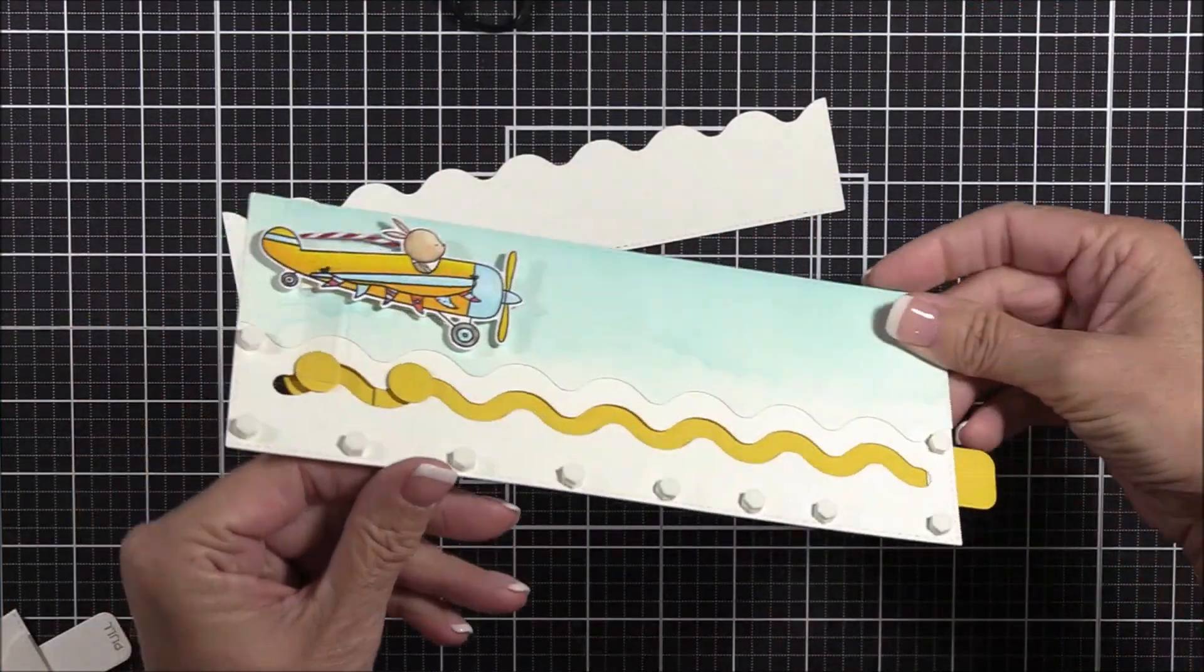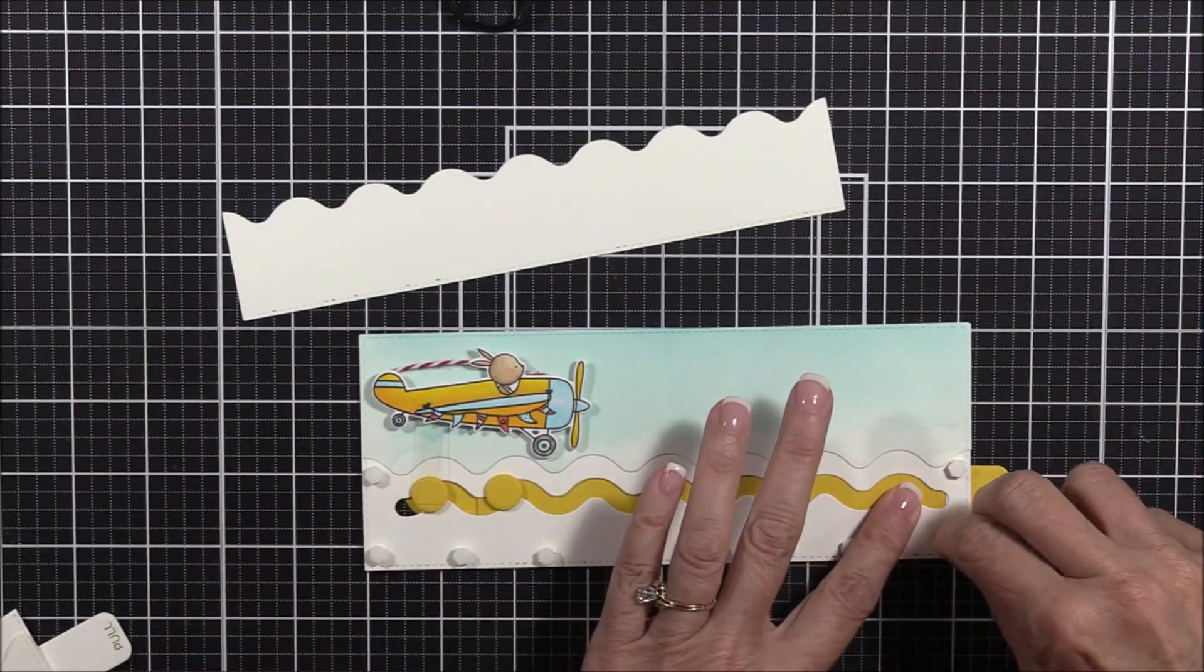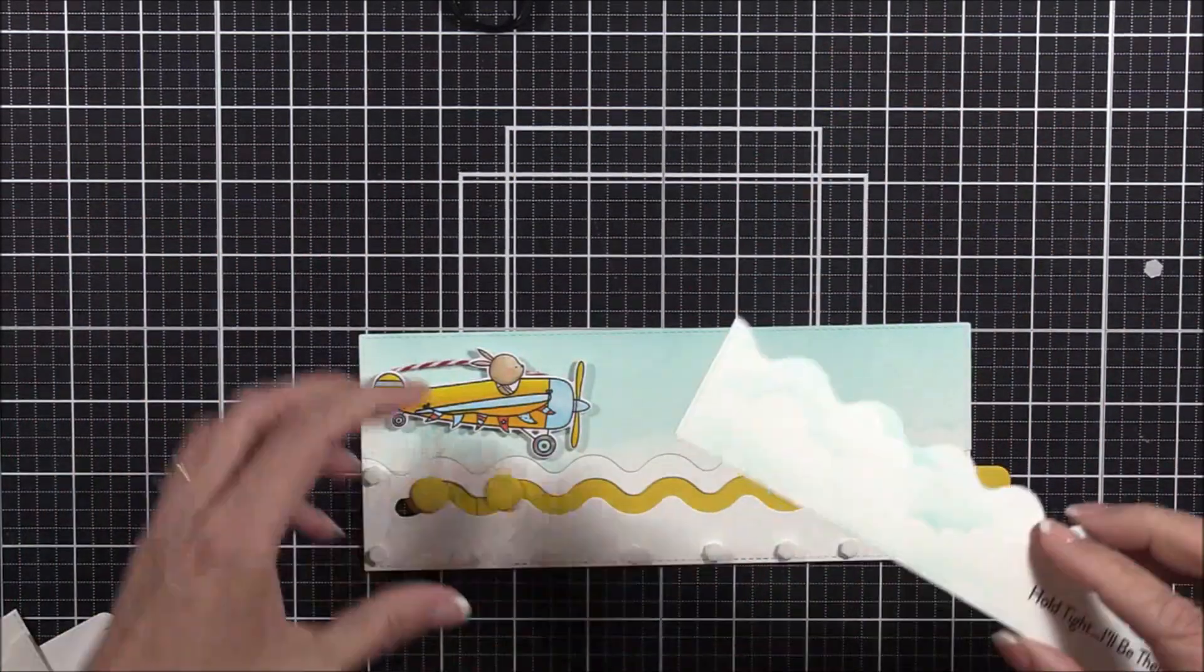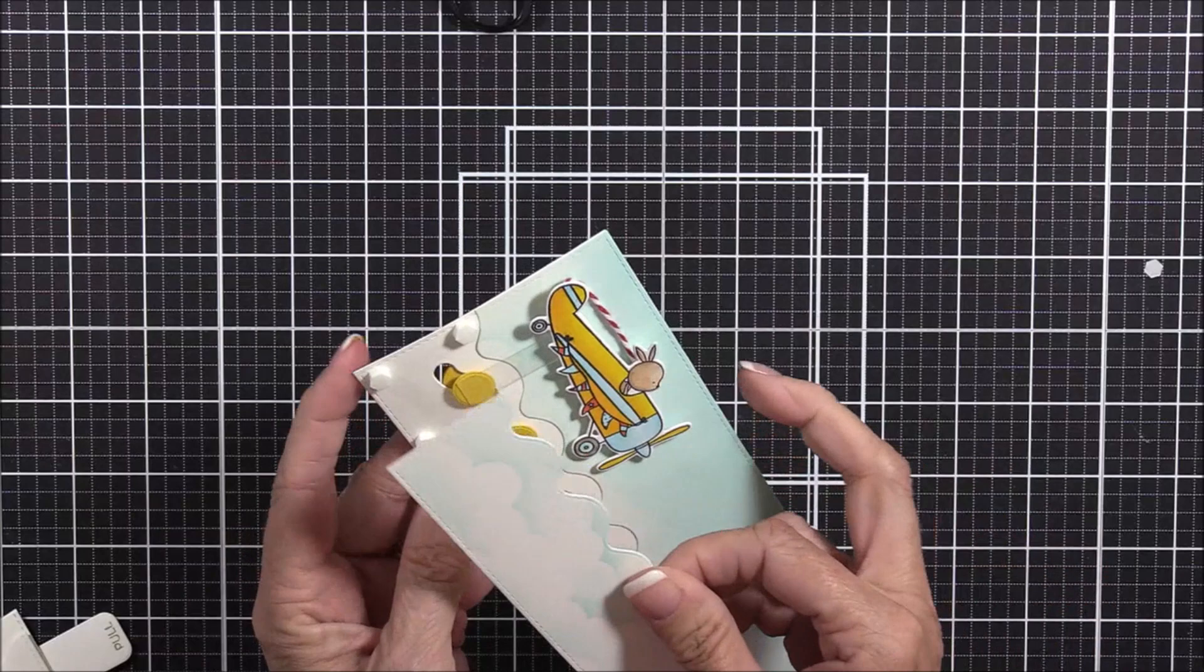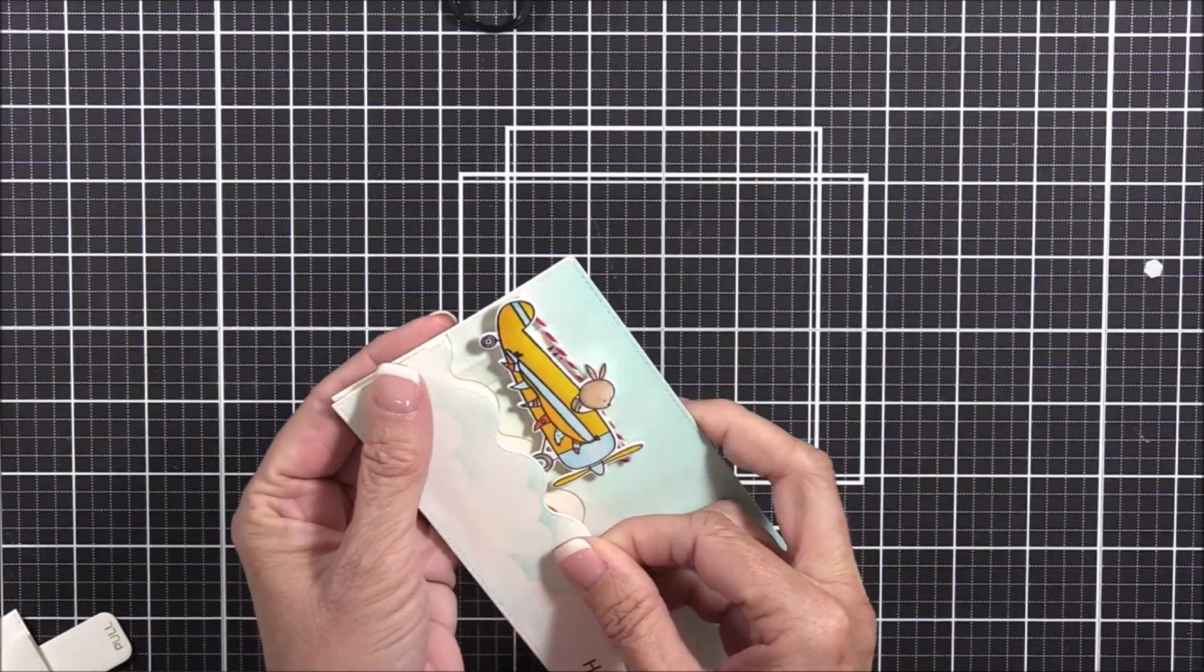Now that the moving parts are in place, I can trim off the excess acetate strip with my scissors. I've adhered a double layer of foam squares to the bottom of the card panel, making sure not to place any foam squares in areas that will interfere with the movement of the plane. And then I'll secure the other half of the ink blended panel.